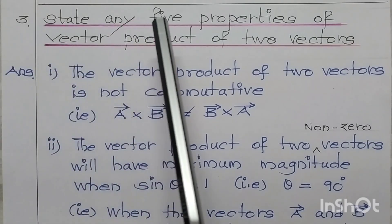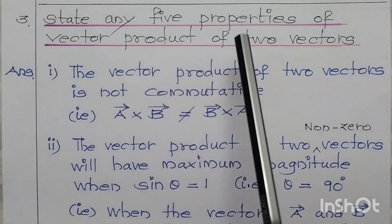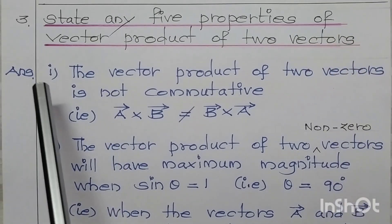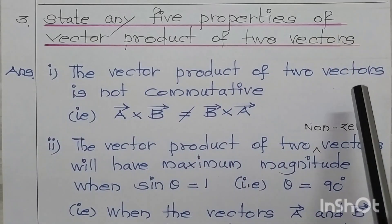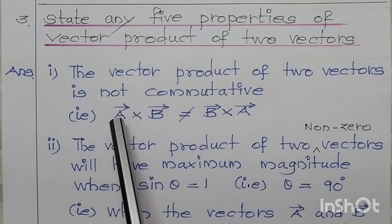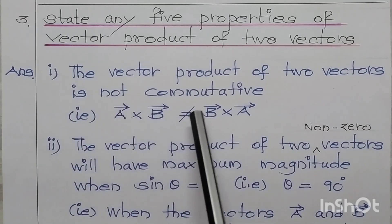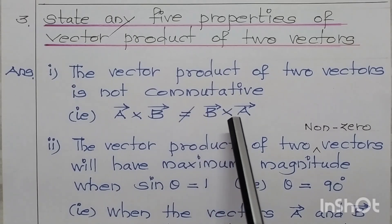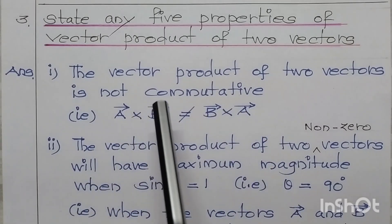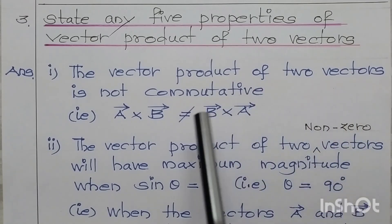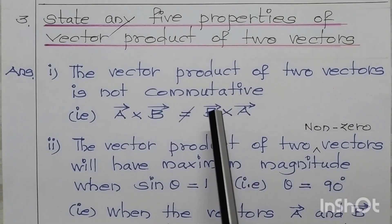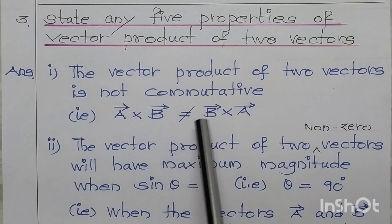State any five properties of vector product of two vectors. Property number one: the vector product of two vectors is not commutative. That is, A vector cross B vector is not equal to B vector cross A vector. The vector product of two vectors does not obey the commutative law.